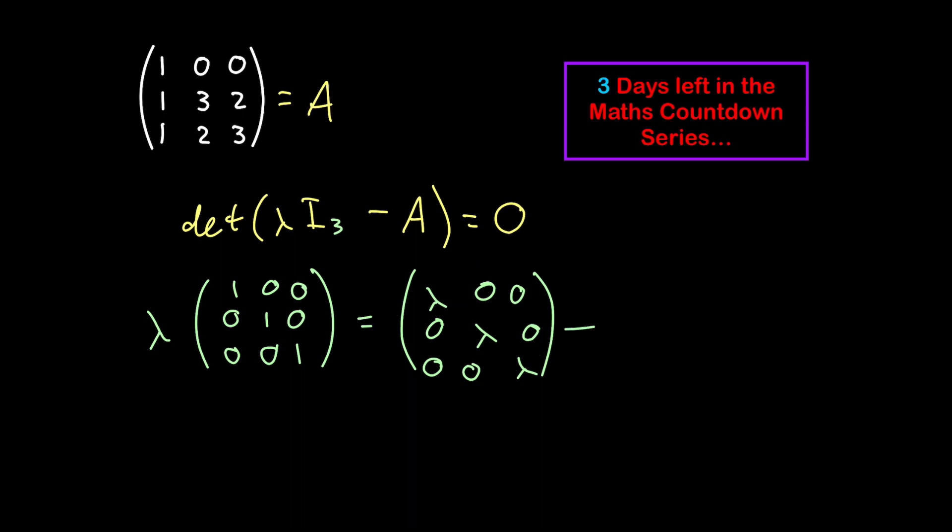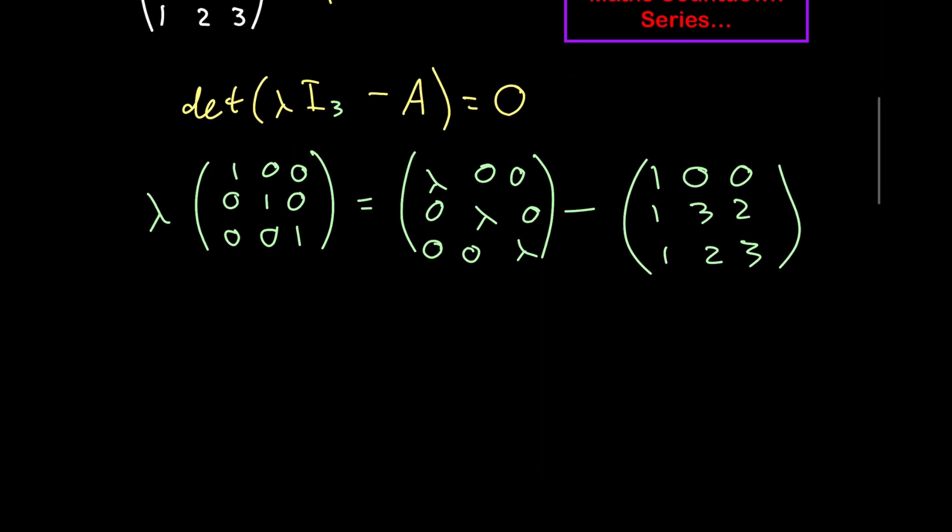From this matrix, we need to subtract our matrix A. In order to do the subtraction, we can do it by subtracting each entry in matrix A from each entry in our lambda I3 matrix. Let's go ahead and do that.